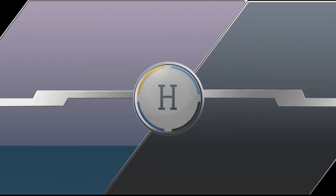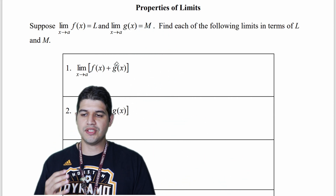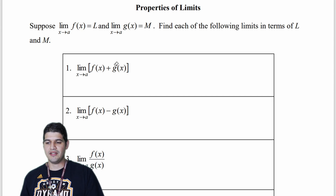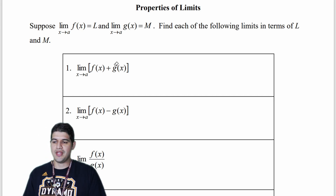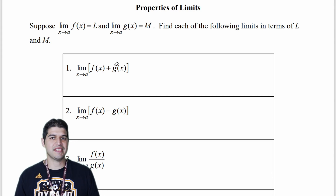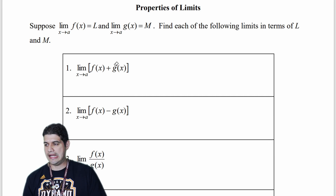Hello students and welcome to the final video of section 1.2. In this video we're going to be looking at properties of limits. We're going to make some suppositions here: the limit as x approaches a of f of x gives us some number L, and the limit as x approaches a of g of x gives us some number M. We're going to find all the following limits in terms of L and M.